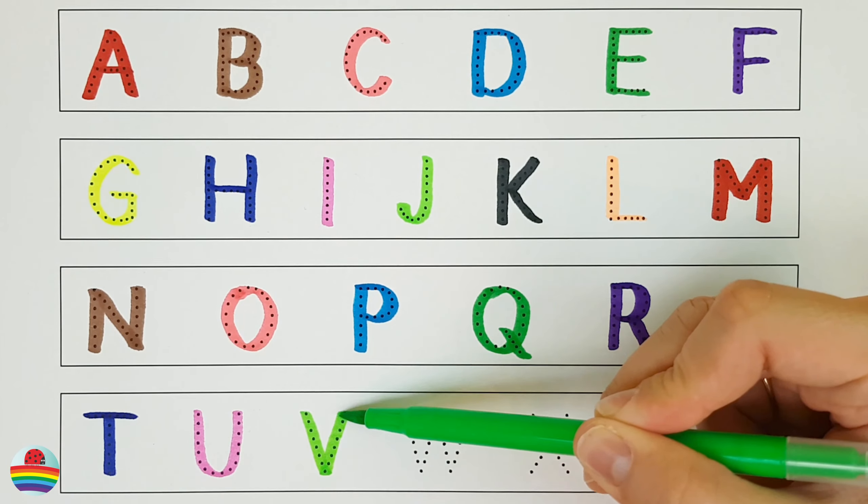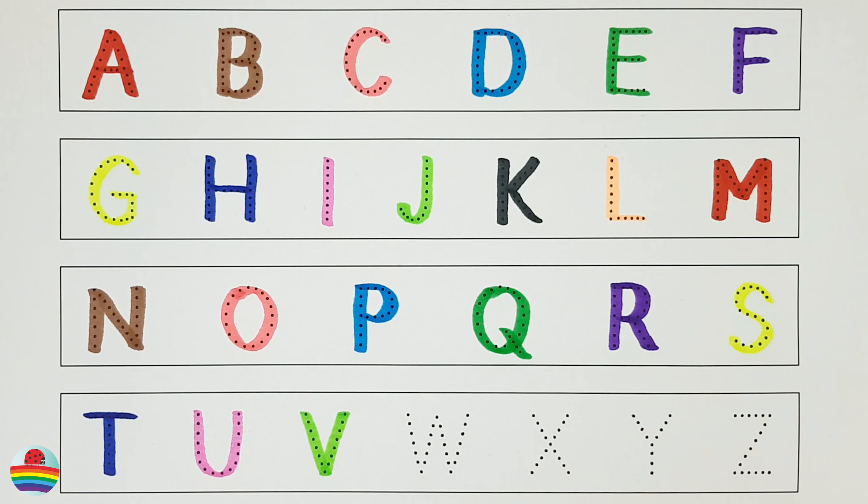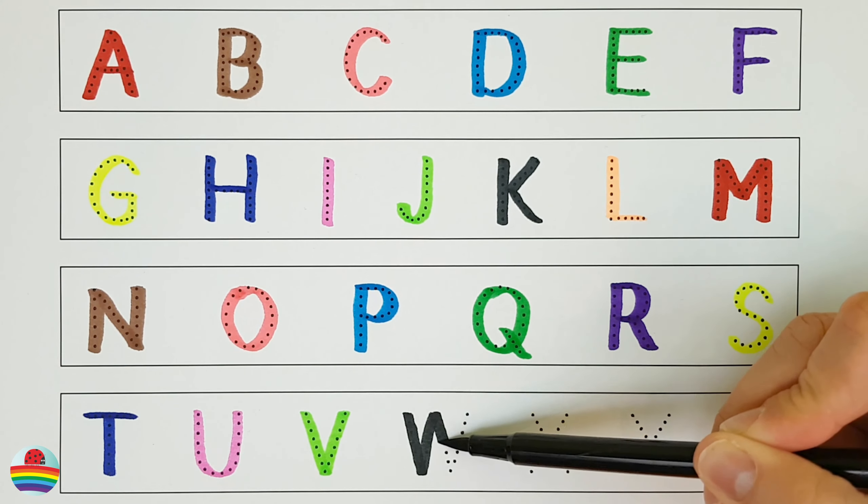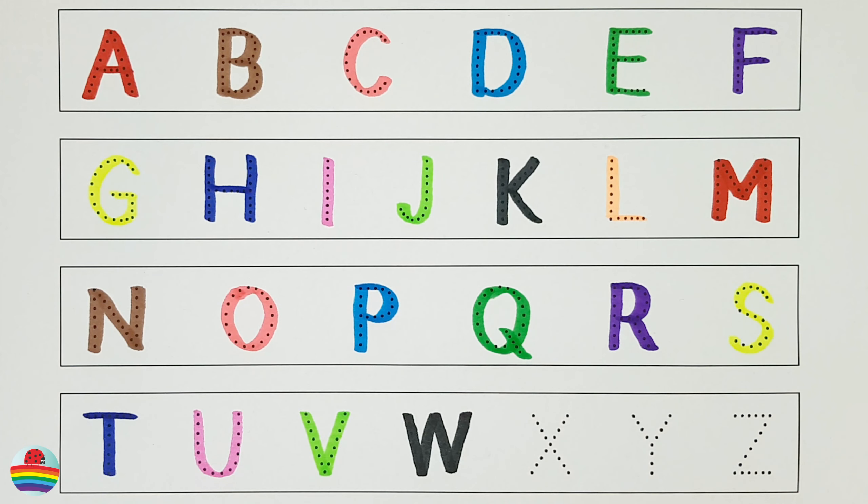V. V is for Vampire Bat. W. W is for Wolf.